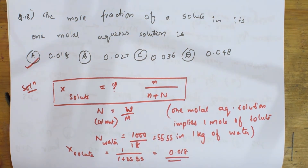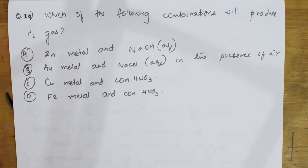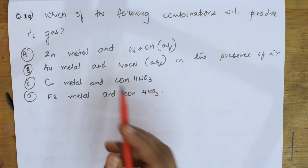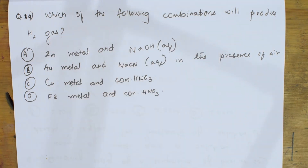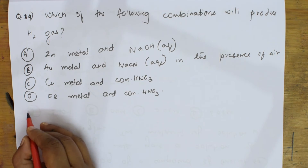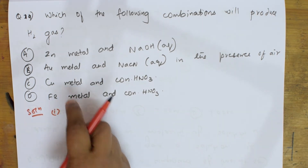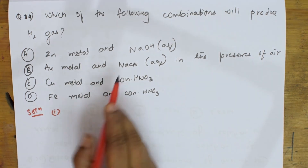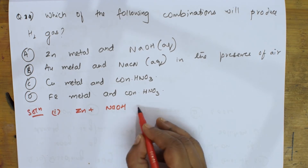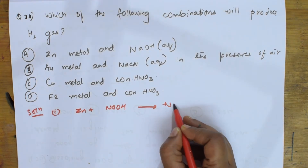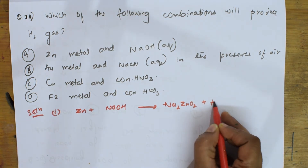Let us come back and do the next numerical. They said: which of the following combinations will produce hydrogen gas? They have given different combinations of metals. The first one: zinc metal reacts with aqueous sodium hydroxide. Zinc plus NaOH gives sodium zincate (Na₂ZnO₂) plus hydrogen gas.